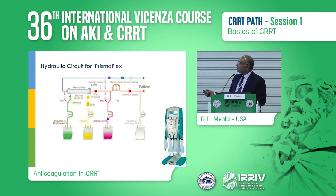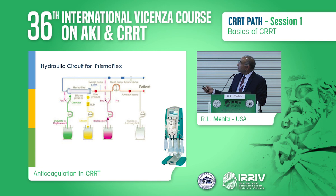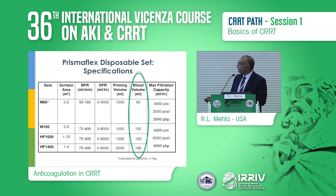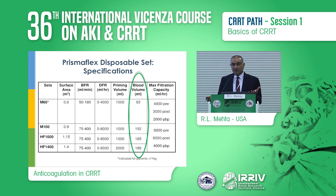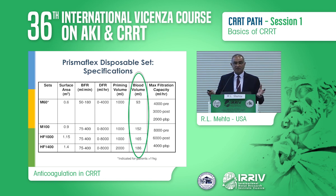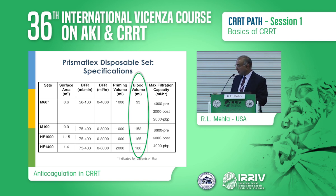This is a reflection of the PrismaFlex circuit, because that's the device we've been using for many years. You've got the blood going in and the return overall. These are the membranes available for the PrismaFlex — you can see the blood volume and capacity. The circuit size varies depending upon what membrane and what machine you're using. The first aspect is to familiarize ourselves with how big the membrane and circuit are, because that's going to influence your anticoagulant strategy.